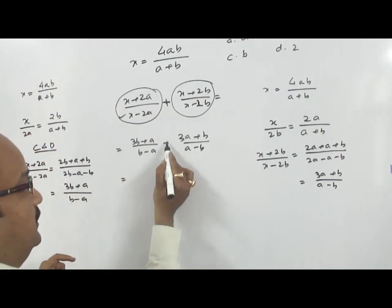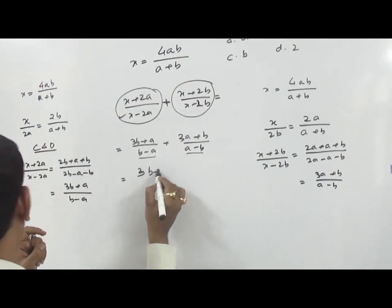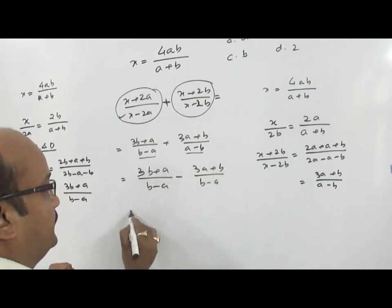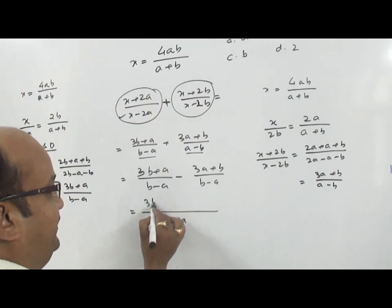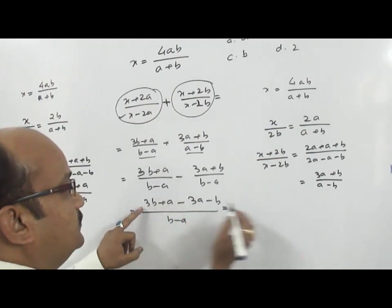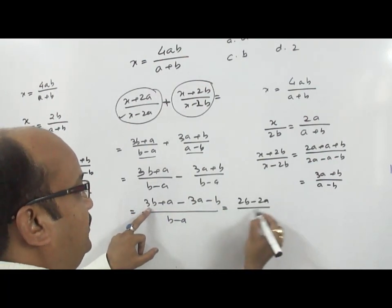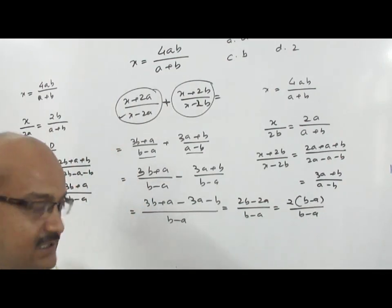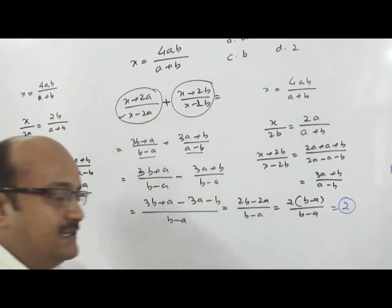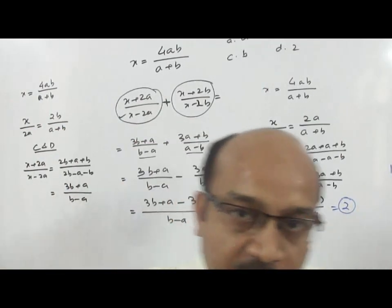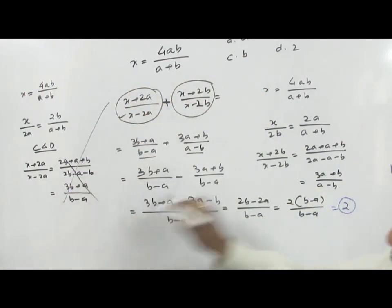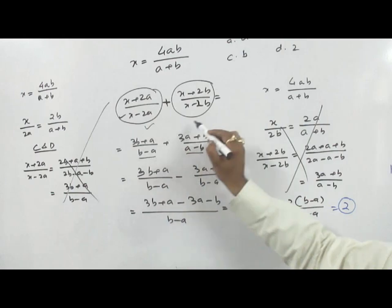Got this point? Now to make both denominators the same, we take minus common from the second term: minus of 3A plus B upon B minus A. With B minus A as the common denominator, it becomes 3B plus A minus 3A minus B upon B minus A, which is 2B minus 2A upon B minus A. So our answer is 2. Friends, always remember — the answer to these type of questions is always 2. Note it down. No need to solve this question in full. Always remember the answer is always 2.